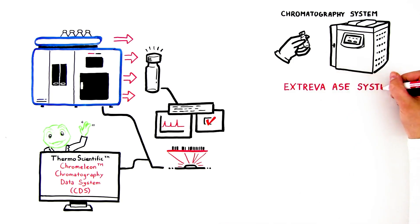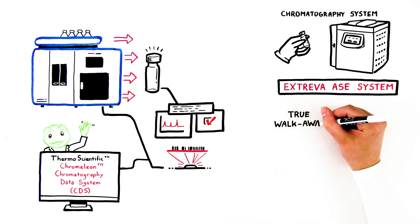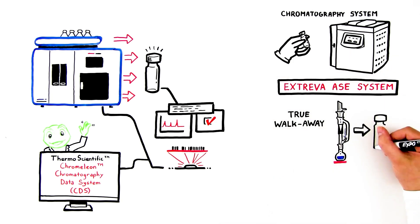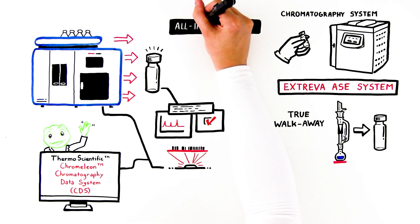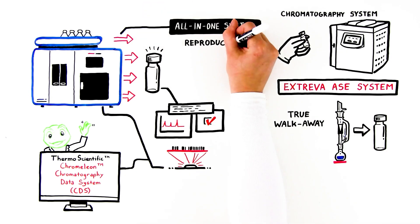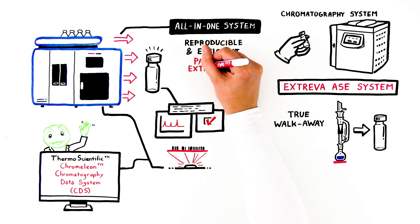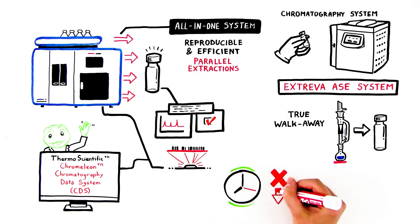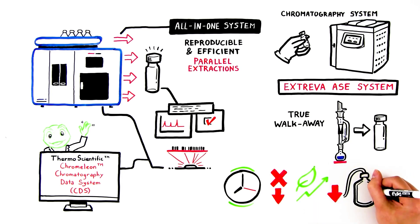For the first time, the Extreva ASE system delivers true, walk-away, sample-to-vial preparation. An all-in-one system that ensures reproducible and efficient parallel extractions while saving time, reducing errors, and advancing your sustainability goals by minimizing solvent usage.